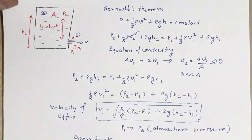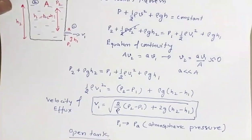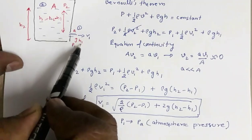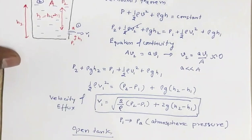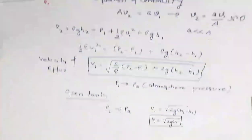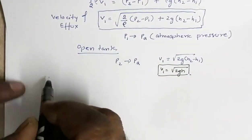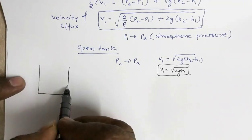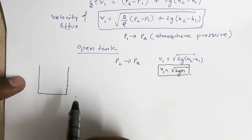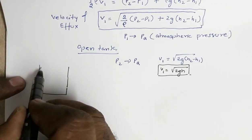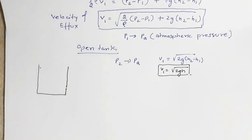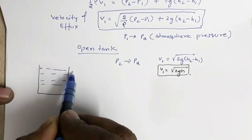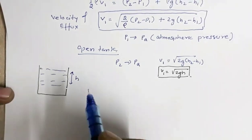Based on this, we will calculate the range — the distance at which this water will fall. For this tank, suppose the opening is at a particular point. The water level above the opening has height h, and the velocity of efflux is the square root of 2gh.